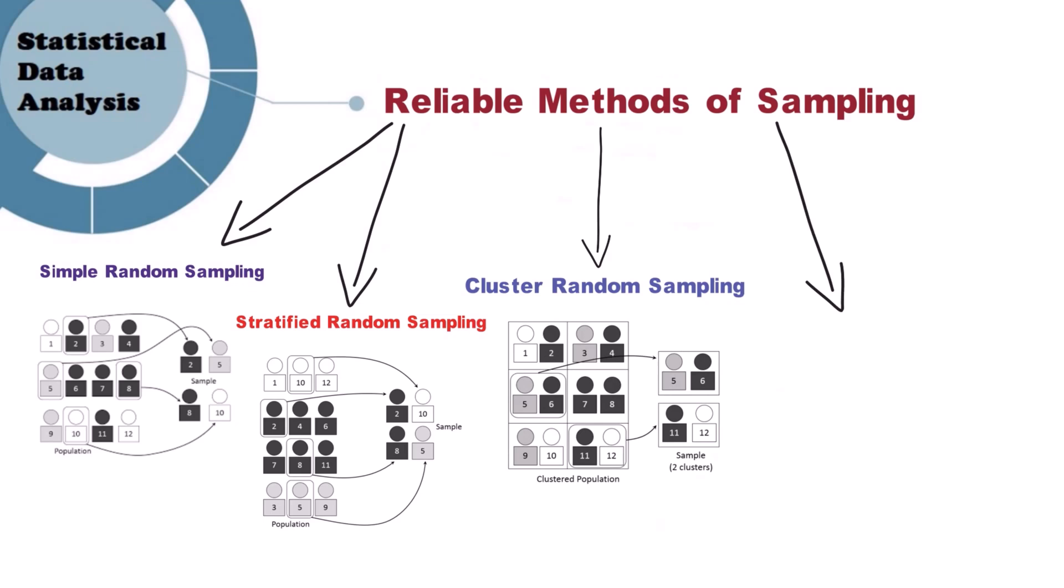Systematic random sampling: Members are selected in order, the starting point is chosen by chance and every nth member is set for the sample.